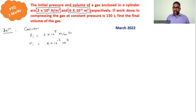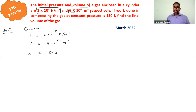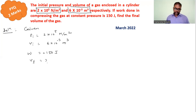Work done in compressing the gas at constant pressure is given as 150 Joule. Now here we compress the gas, so work done is negative by sign convention — when expansion occurs work done is positive, when compression occurs work done is negative. We have to find the final volume Vf.